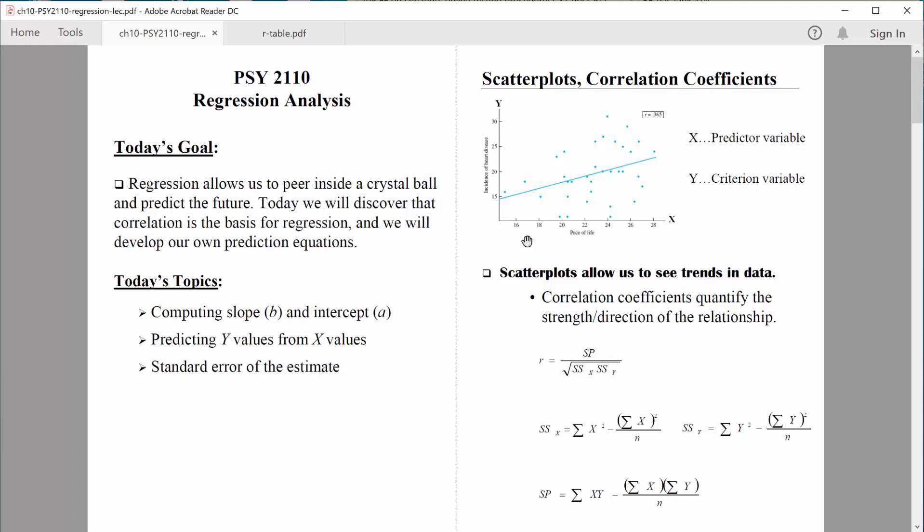So imagine that we measure it in some way that we can quantify that some people live busier, more hectic lives than others. And then on the y-axis,